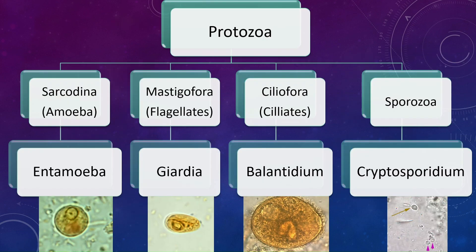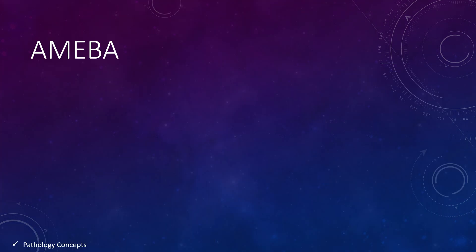In this video we are looking at the protozoa part of stool parasites. The sub-kingdom Protozoa has four main subgroups: Sarcodina, Mastigophora, Ciliophora, and Sporozoa. The most common organisms respectively are Entamoeba, Giardia, Balantidium, and Cryptosporidium.